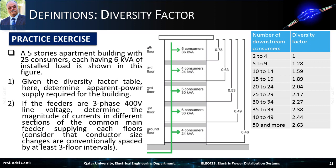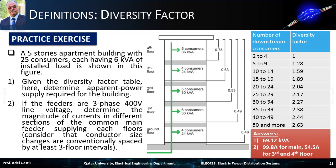The final answers are 69.12 kVA for the apparent power supply required for the building, 99.8 amps for the main feeder going up to the second floor, and 54.5 amps for the feeder supplying the third and fourth floors.